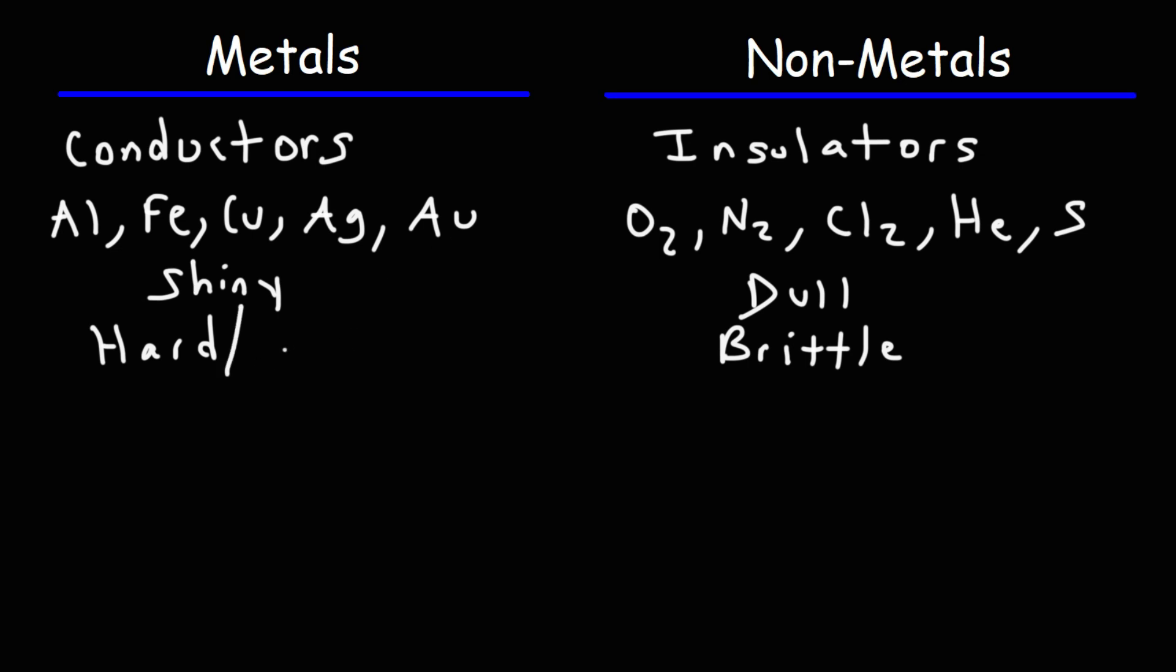Metals have another property. They're also malleable. This means that they can be hammered into flat sheets. Metals are also ductile. They can be pulled or drawn into wires.